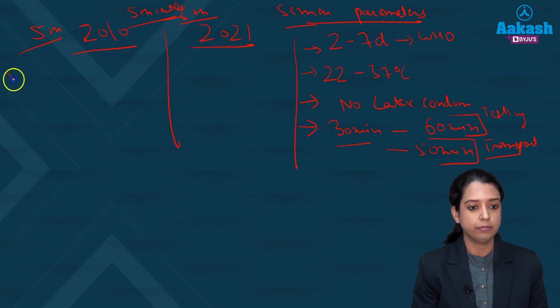So now the semen volume. If you talk about volume, initially the volume which was normal was 1.5 ml should be the volume of an ejaculate. It is now lowered down to 1.4 ml. So the changes are very less but you have to know the right figure. So now it is 1.4 ml.